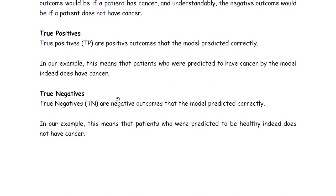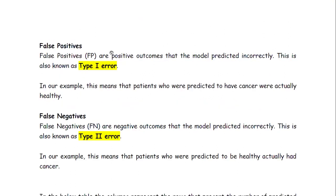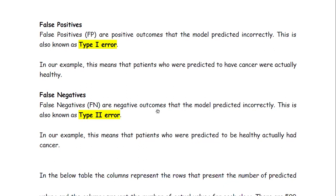False positives (FP) are the positive outcomes that the model predicted incorrectly. False positive is also known as Type 1 error. In our cancer example, the patients were predicted to have cancer but were actually healthy — the machine predicted incorrectly and gave a false positive outcome.